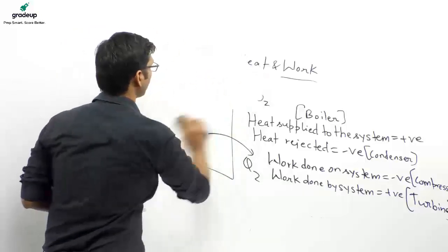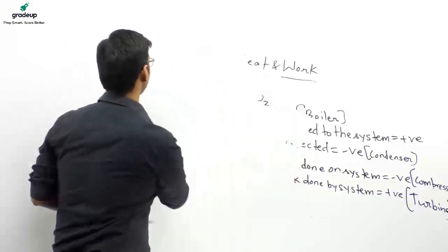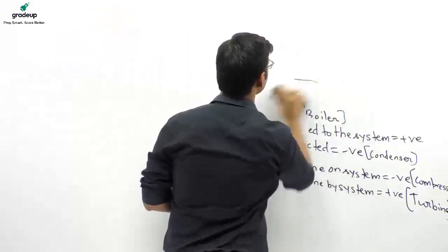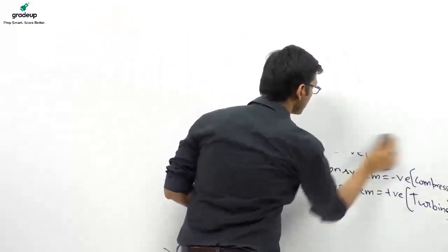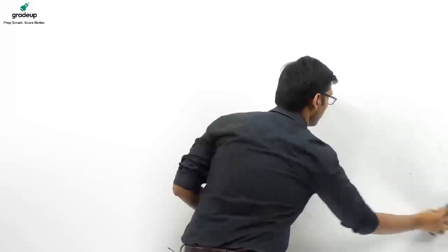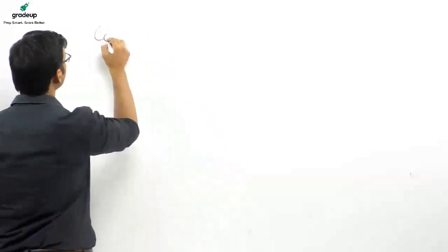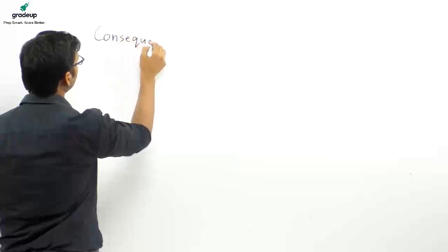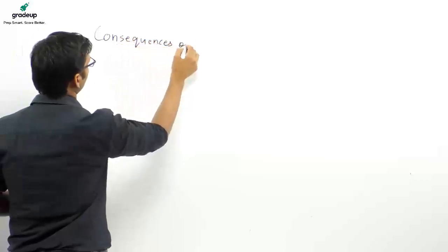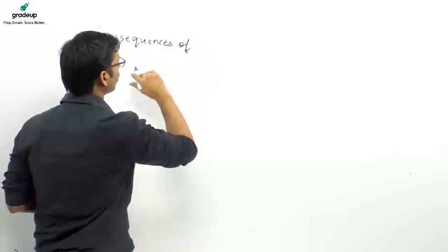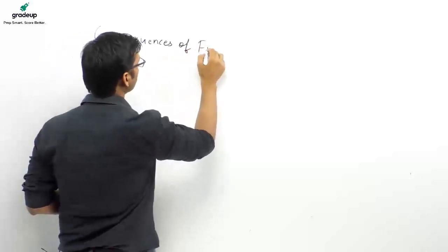Coming back to the definition: the quantitative definition of the first law for a closed system undergoing a cycle is that net heat interaction equals net work interaction. If a cycle is given, apply this law. Now there are some consequences of the first law of thermodynamics.